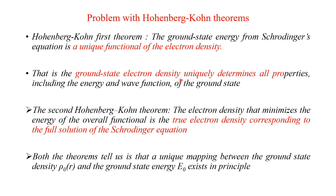The Hohenberg-Kohn theorem says that the ground state energy obtained from Schrödinger's equation is a unique functional of electron density, i.e., the ground state electron density uniquely determines all the properties including the energy and the wave function of the ground state. The second Hohenberg-Kohn theorem says that the electron density that minimizes the energy of the overall functional is the true electron density corresponding to the full solution of the Schrödinger wave equation. The theorem tells us that a unique mapping between ground state density ρ₀(r) and the ground state energy E₀ exists in principle.